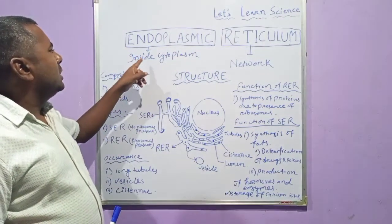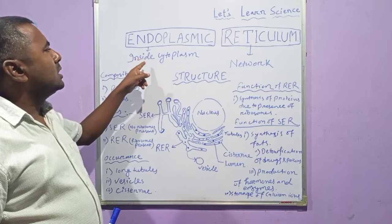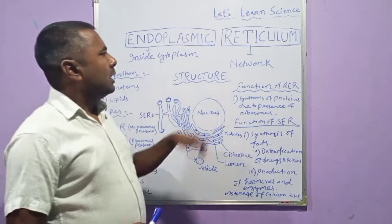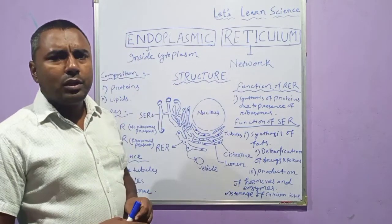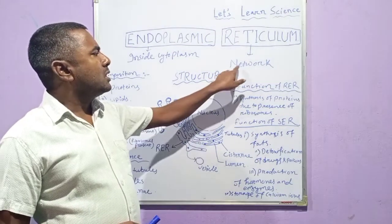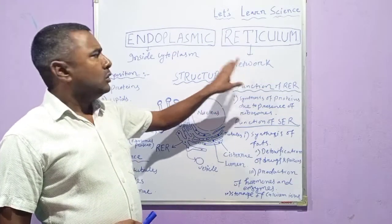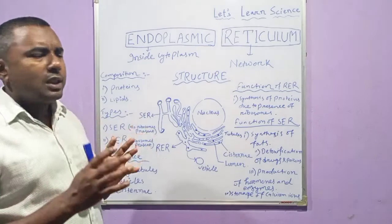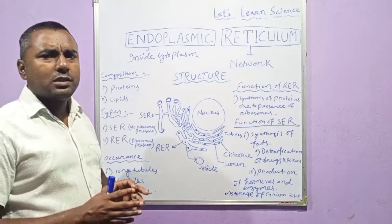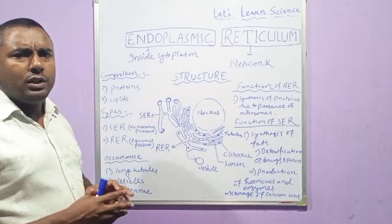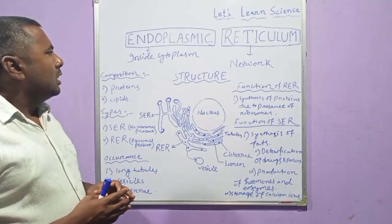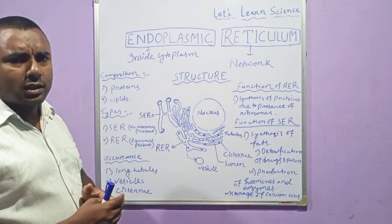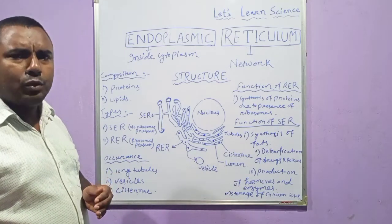The word 'endoplasmic' means inside cytoplasm. 'Endo' means inside and 'plasmic' means cytoplasm. The word 'reticulum' is derived from a Latin word which means net-like, or you can simply say network. So the complete term 'endoplasmic reticulum' means the net-like or network structure that is formed inside the cytoplasm.